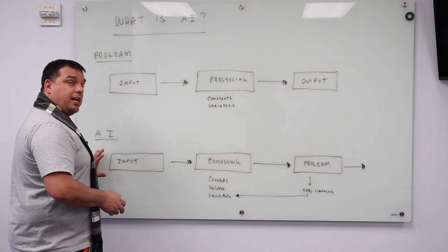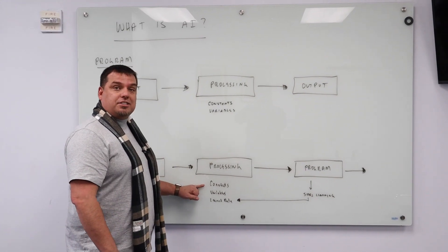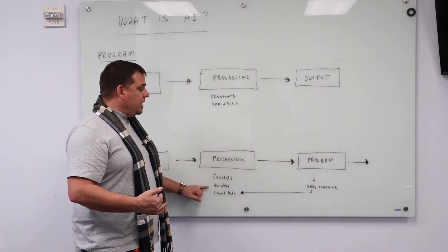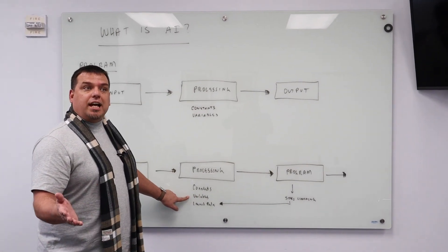So for example, an AI algorithm could have an input which fires the program. During processing, we're looking at constants, which are the set points, variables, which is the feedback from the flow control valve. And then we output to a program which stores the result.